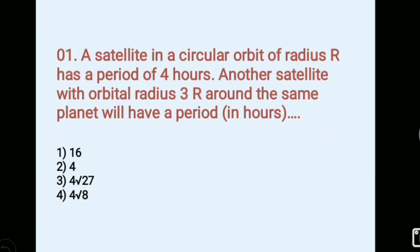A satellite in a circular orbit of radius R has a period of 4 hours. Another satellite with orbital radius 3R around the same planet will have a period in hours. Options: 1) 16, 2) 4, 3) 4 root 27, 4) 4 root 8. Answer 3, 4 root of 27.